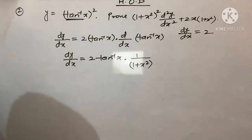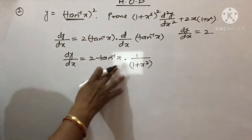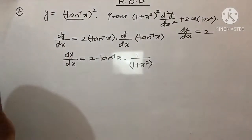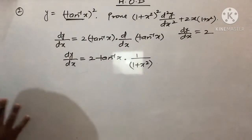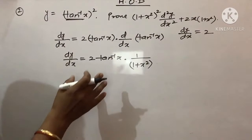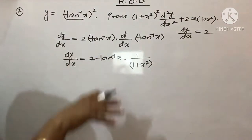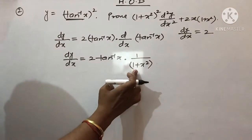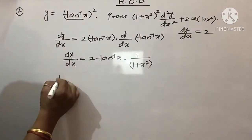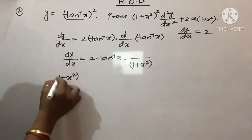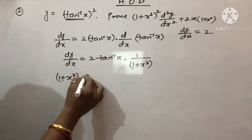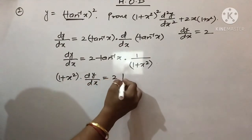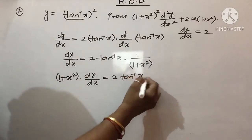Vaapas se meri wahi baat — yahan par bhi aap quotient rule se bachein, jitna ho sake. Agar aapka command bahut tagda hai toh aap kaise chahein waise kar sakte hain. Main kya karunga — is function ko LHS mein leke aaunga, then it will be: (1 + x²) · dy/dx = 2·tan⁻¹x.